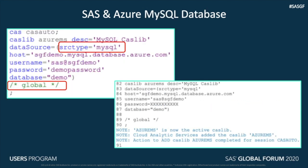We are looking at the MySQL database. Here we use SAS Access Interface to MySQL, specified by setting the source type parameter to MySQL. The connection information is specified directly with host and user credentials. In this example, the global parameter is commented out, meaning a CAS library reference to the SQL database will only be available to the current CAS session — other users won't be able to see it. With this source type, other flavors of MySQL databases available in Azure can be accessed as well, such as MariaDB and MemSQL.